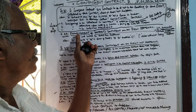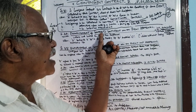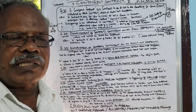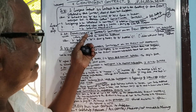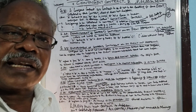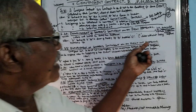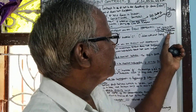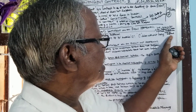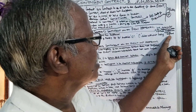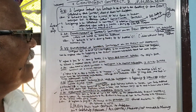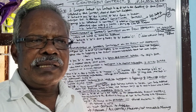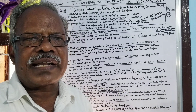Section 32: Enforcement of contracts contingent on an event happening. If the event happens, then the contract can be enforced. The contract to do an act on the happening of an uncertain condition is not to be enforced unless and until the event has happened — the enforcement of the contract cannot be done until that event occurs.